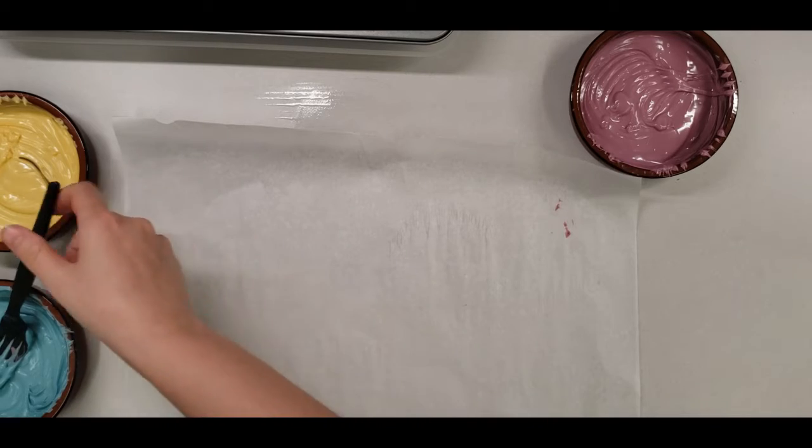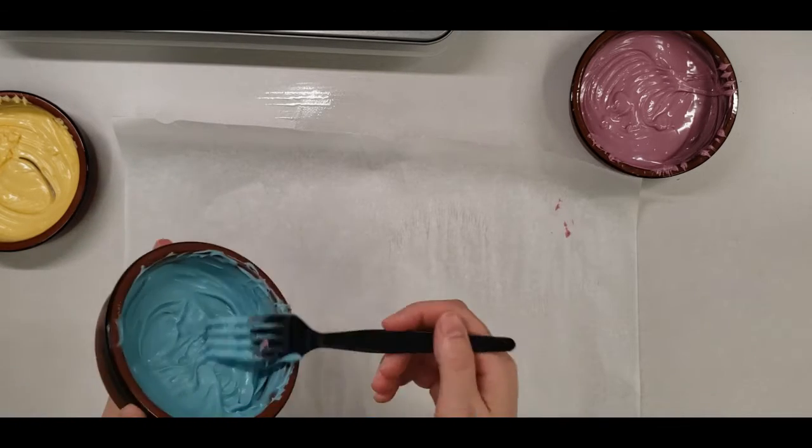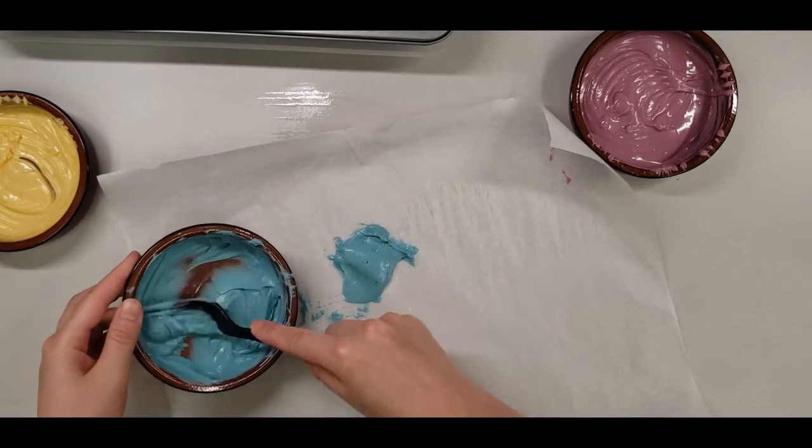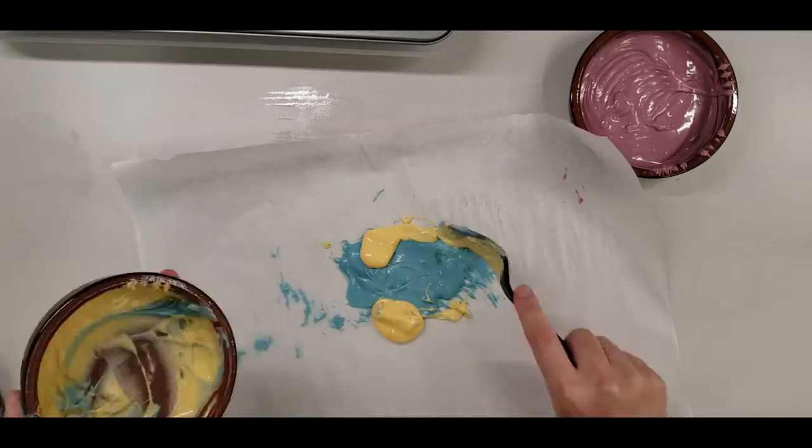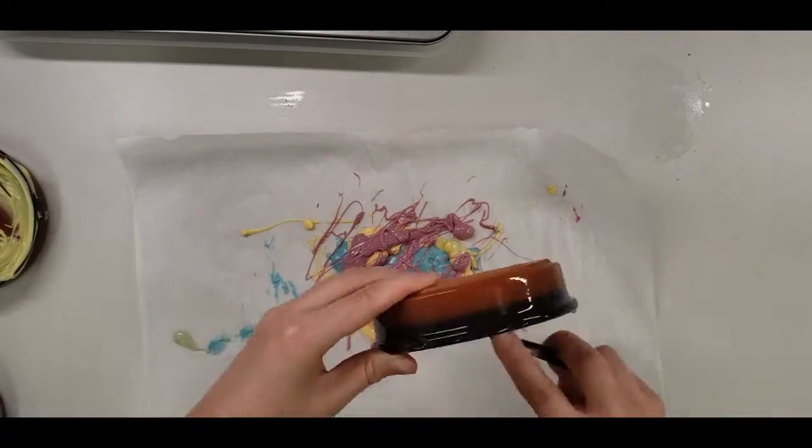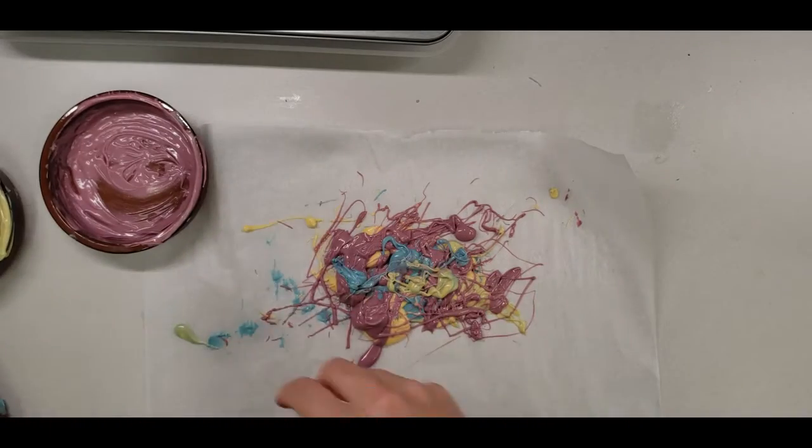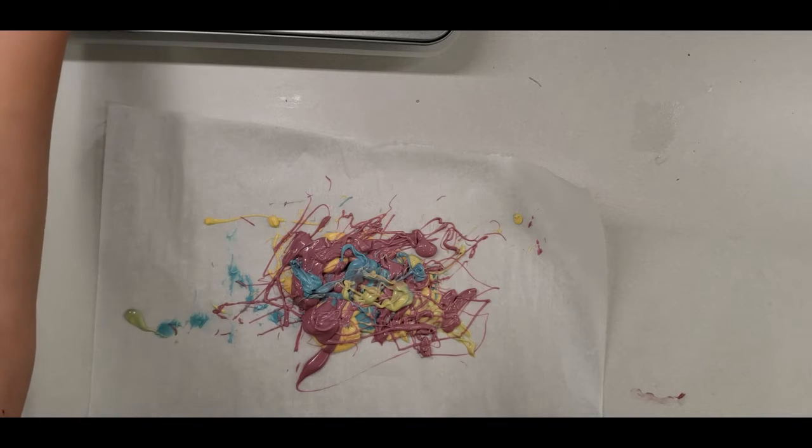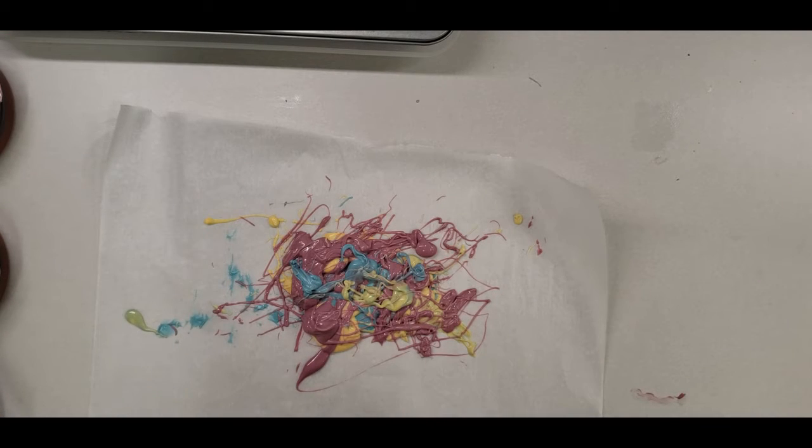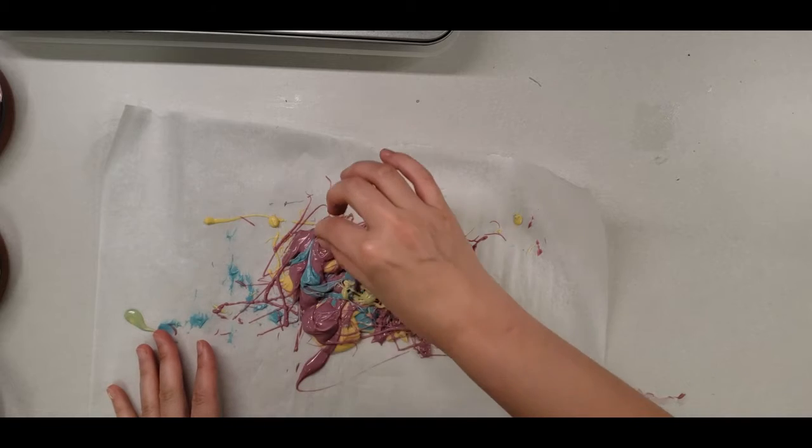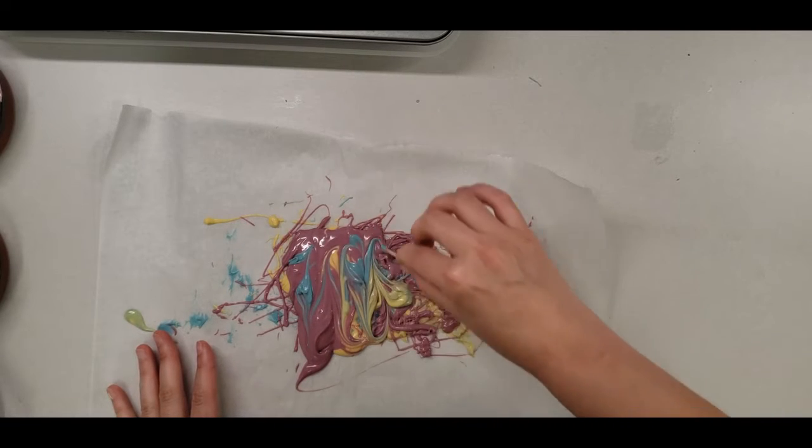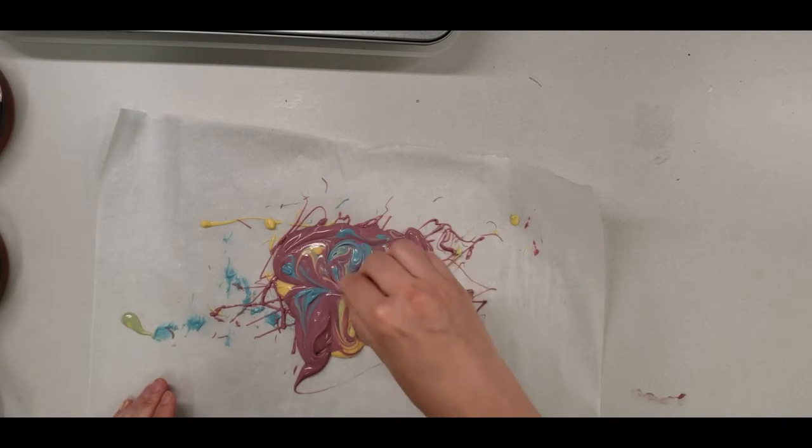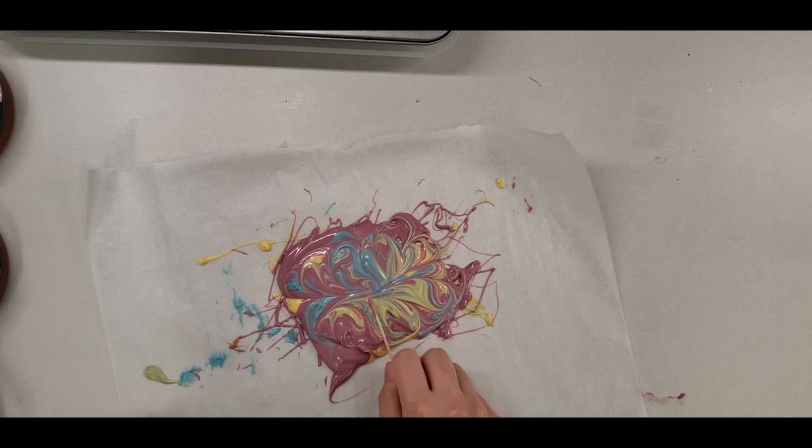Now we're going to take our sheet of parchment paper and lay down lines of this, or more like blocks really. There's all my colors blobbed on. If you have a spatula, I'd recommend using it. I'm going to trace patterns through this with my toothpick to get some wavy lines. I'll try and spread it thinner, maybe. I don't know.